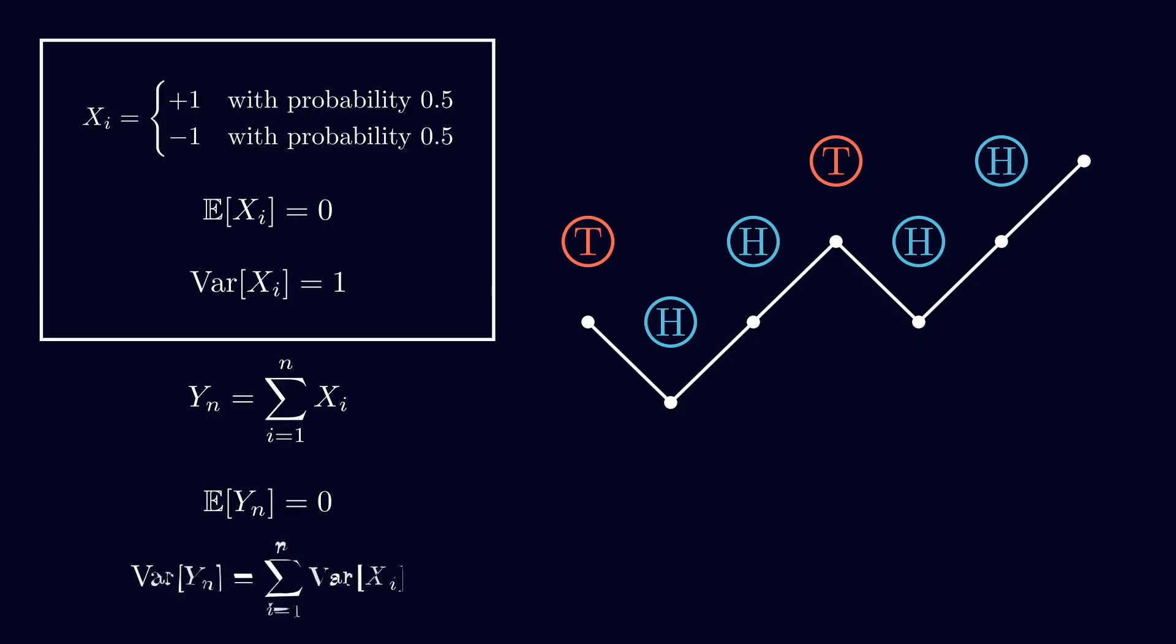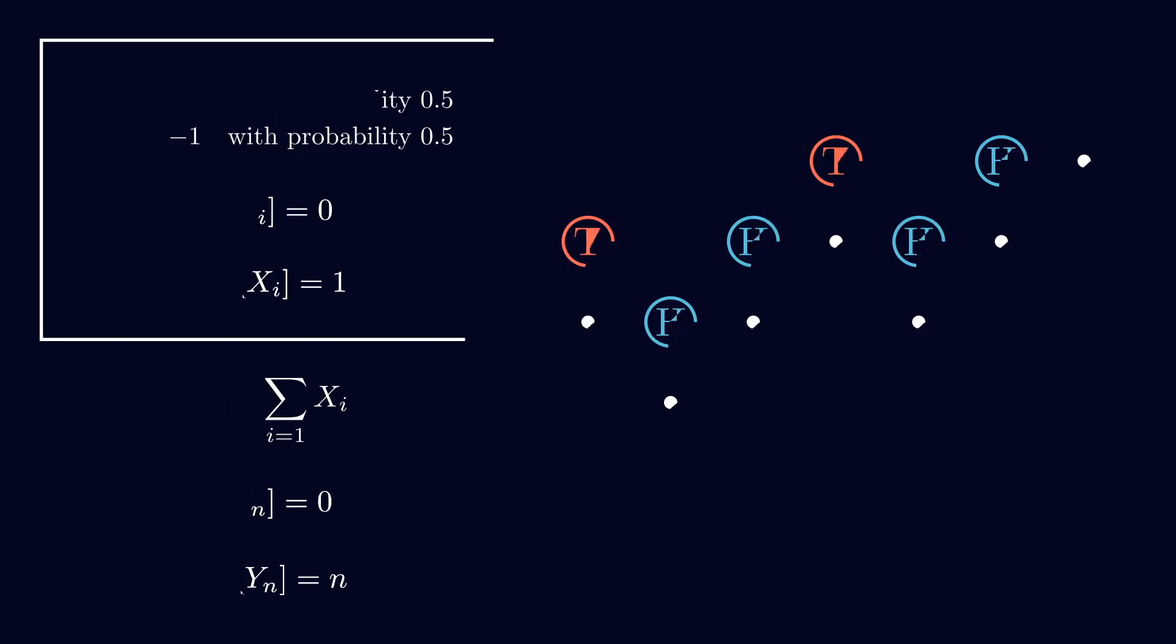The main problem with this basic random walk is that it is discrete. You only get values at specific points, like 0, 1, 2, 3, but nothing in between. But if you think about something like the stock market, the values there are defined continuously. As long as the market is open, you've got values changing every second, every millisecond. So this simple random walk doesn't really fit for a situation like that.